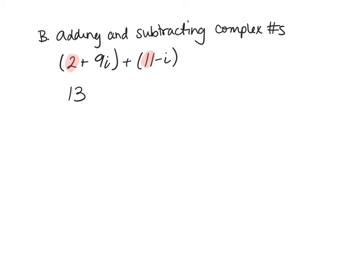And then I have my imaginary parts: 9i plus negative i gives me plus 8i. Because 9i minus 1i gives me 8i. And that's my final answer.